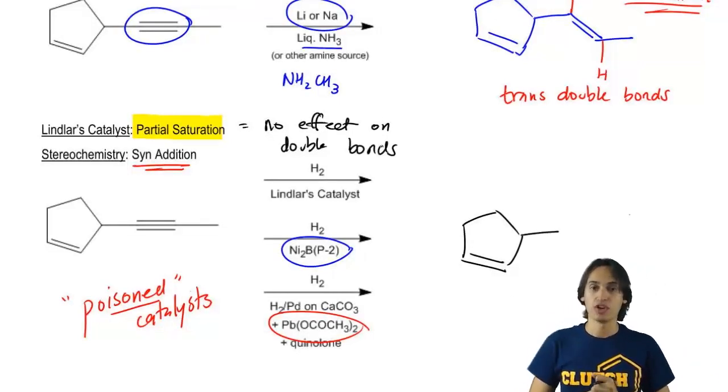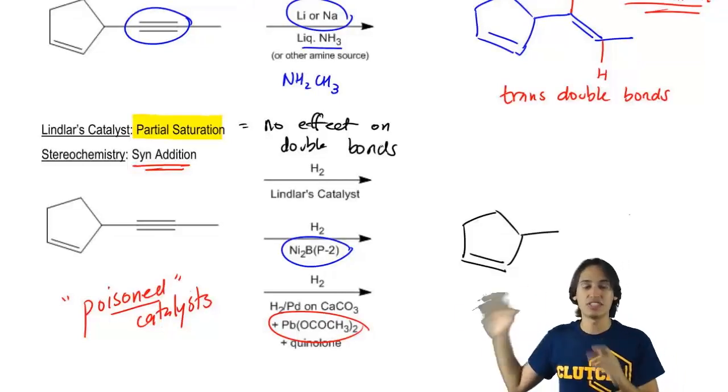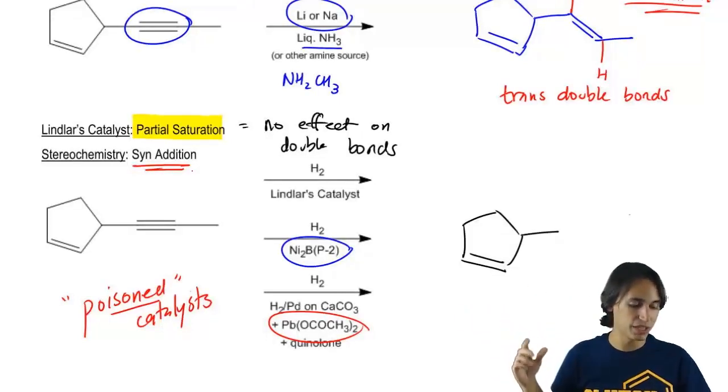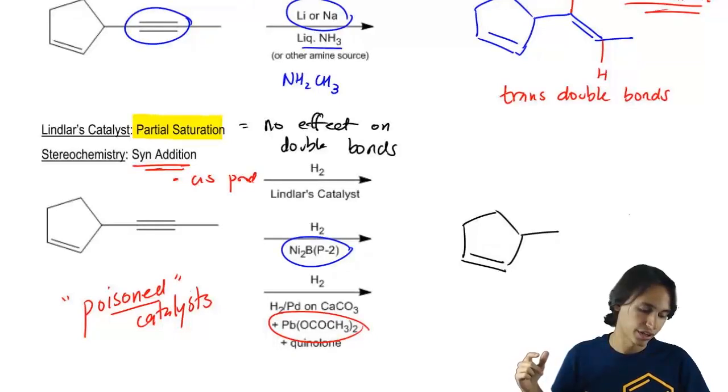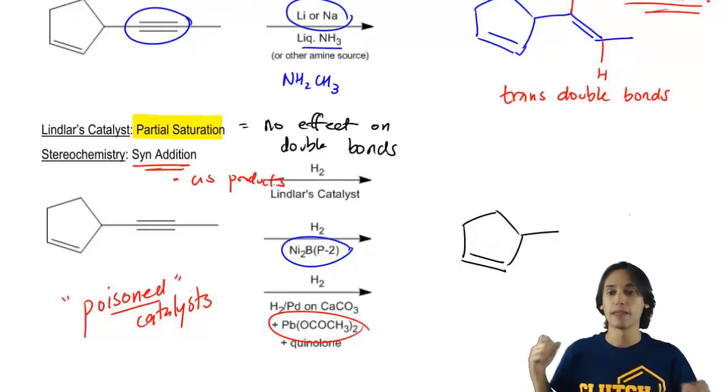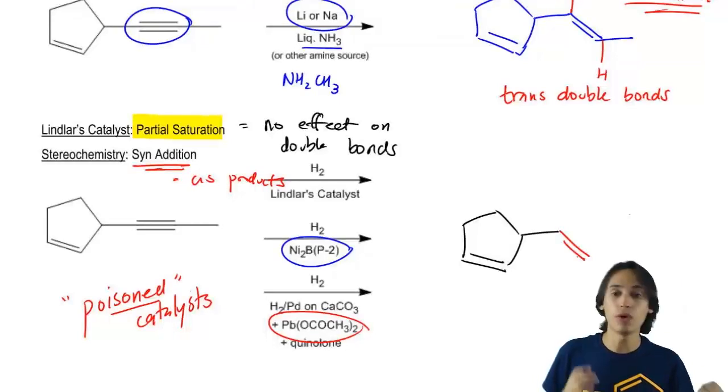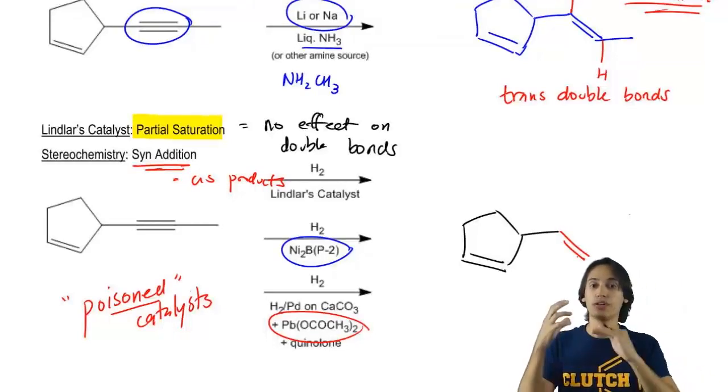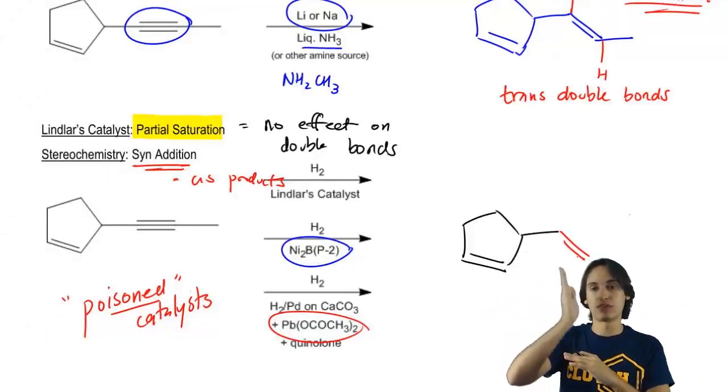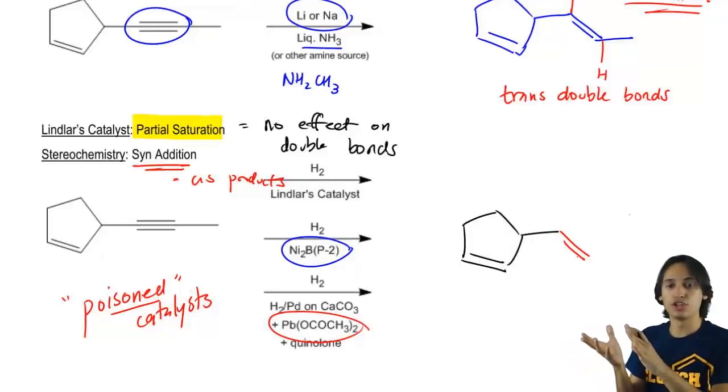So how should I draw it? Well, in this case, I have syn addition and what syn addition means is that I'm going to get cis products. So what I would expect is that I have to draw this double bond now in a way that has my R group cis to whatever that double bond is.